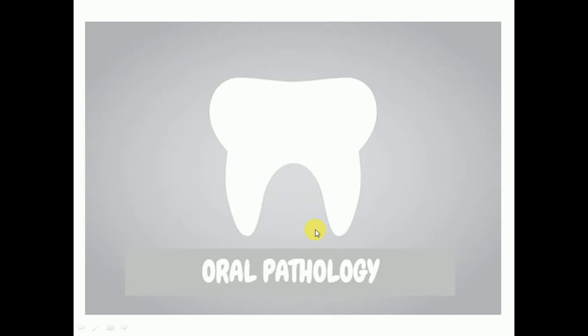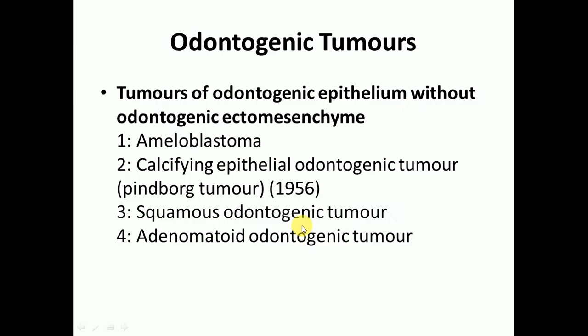Hello, this is Dr. JK, and today we'll discuss odontogenic tumors. Odontogenic tumors consist of benign and malignant tumors. Benign tumors may arise from the odontogenic epithelium without odontogenic ectomesenchyme, and include ameloblastoma, calcifying epithelial odontogenic tumor (also known as the Pindborg tumor, described by JJ Pindborg in 1956), squamous odontogenic tumor, and adenomatoid odontogenic tumor. Today we will focus on ameloblastoma.